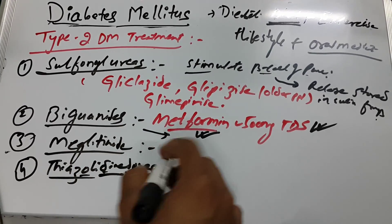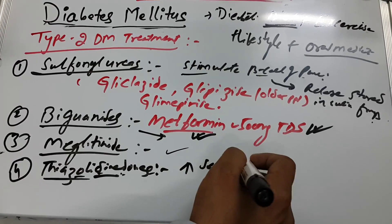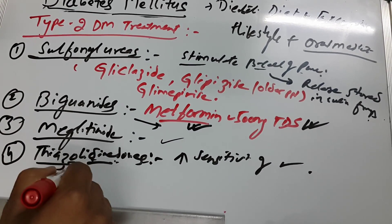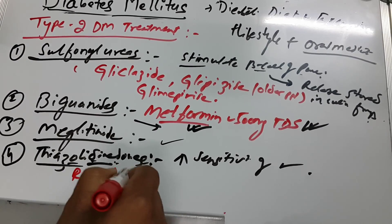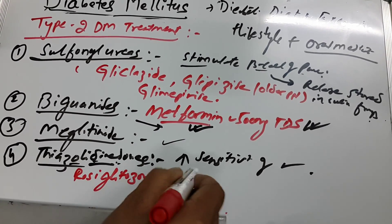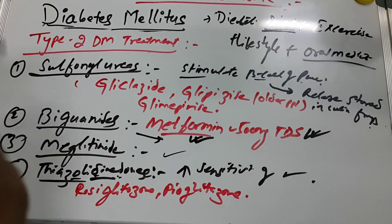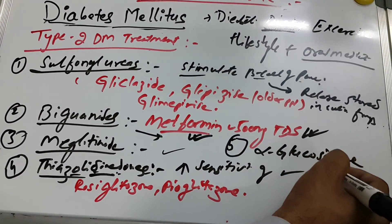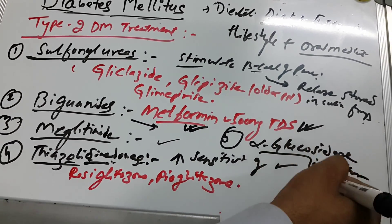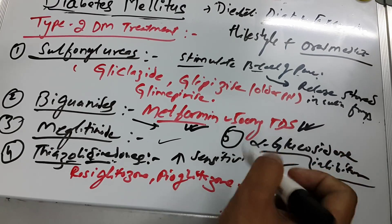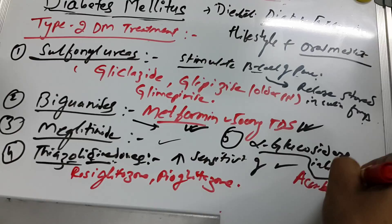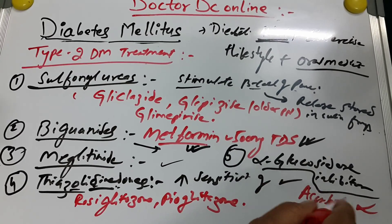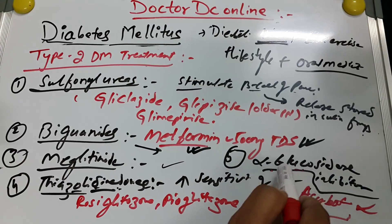The fourth group is thiazolidinediones — a difficult name. This group increases the sensitivity of peripheral tissue to insulin. Common drugs include rosiglitazone and pioglitazone. The fifth and last group is alpha-glucosidase inhibitors. The drug name is acarbose, and its main function is to reduce intestinal absorption of carbohydrates by inhibiting the enzyme alpha-glucosidase in the brush border of the small intestine.